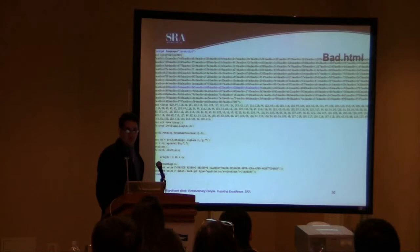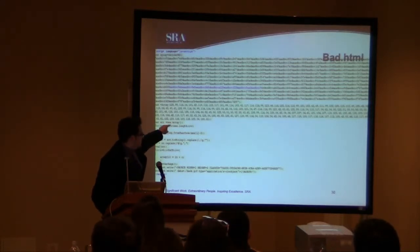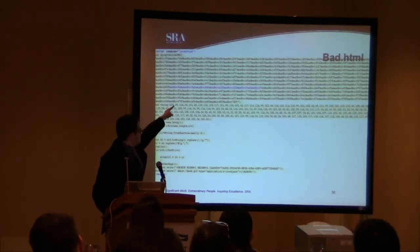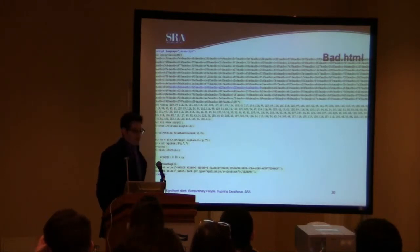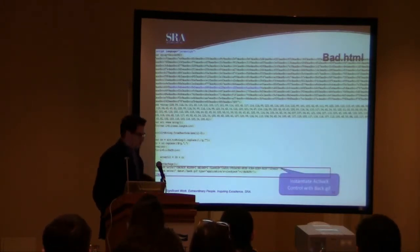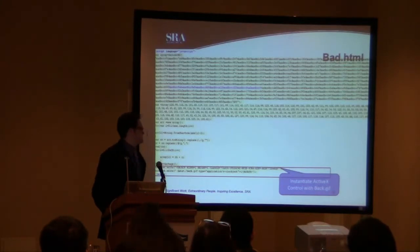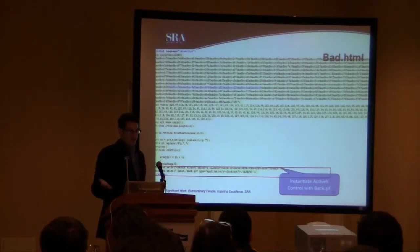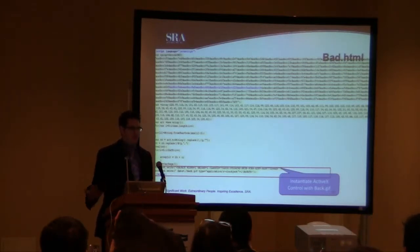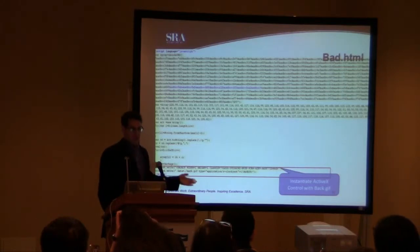So we've got the semi-obfuscated array here to turn the shellcode into JavaScript unescape. And down here we actually see it instantiate the ActiveX control with a file called back.gif. So bad.html is essentially loading the shellcode into the heap for us, and it instantiates the bug which is in back.gif.